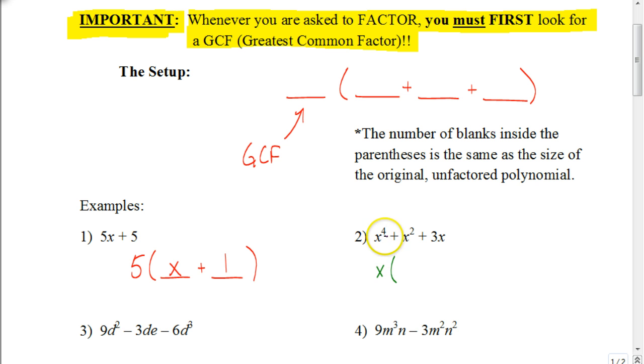When I do that, if I had x to the 4th and I factor out an x, I'm left with x cubed. If I have an x squared and I factor out an x, I'm left with just x. If I have a 3x and I factor out an x, I'm left with just 3. There's nothing more that I can factor out of that, so I know that this is complete. I have x cubed plus x plus 3 in parentheses there.